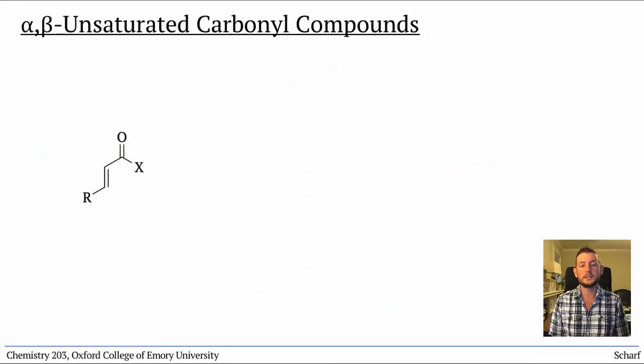This sort of conjugated system is called an alpha-beta unsaturated carbonyl because there is an alkene between the carbons alpha and beta to the carbonyl group. So, are these compounds nucleophiles, as we might expect from the alkene portion?